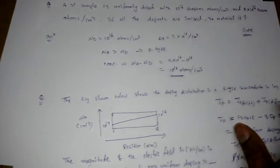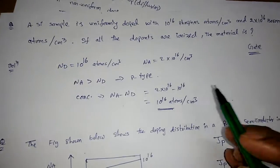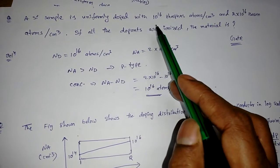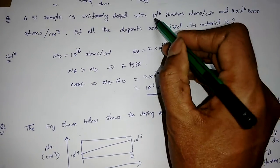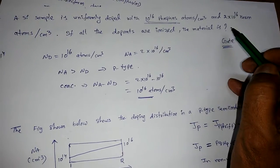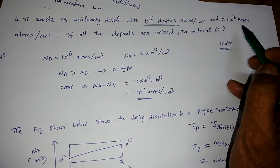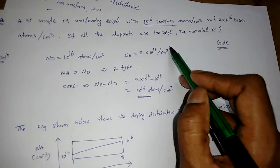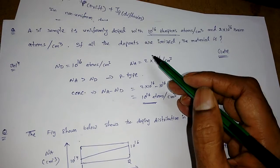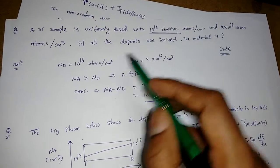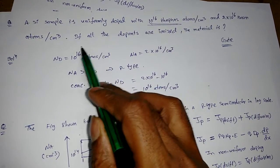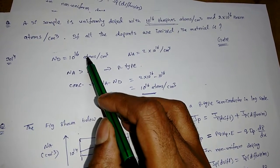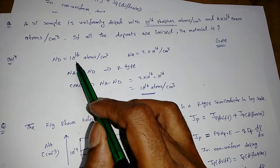Now let's solve a GATE problem. A silicon sample is uniformly doped with 10^16 phosphorus atoms per cm³ and 2×10^16 boron atoms per cm³. Phosphorus is an n-type dopant so Nd = 10^16, and boron is a p-type dopant so Na = 2×10^16. Since Na > Nd, we can immediately identify this as a p-type semiconductor.